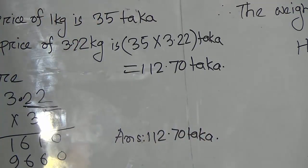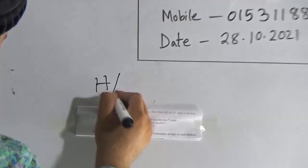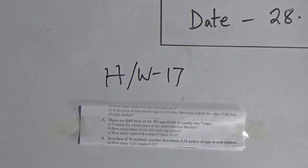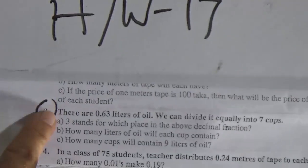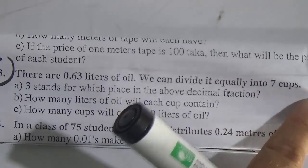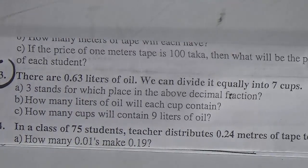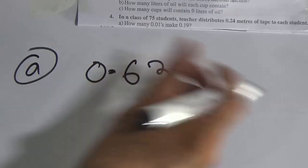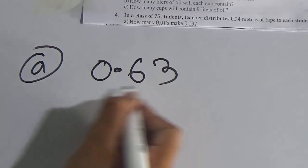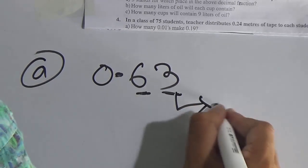My dear students, hope you understood this one. Practice it at home. Now look here — your homework is question number 17, question number 3. There are 0.63 liters of oil and we can divide it equally into 7 cups. For number A: 3 stands for which place in the decimal fraction 0.63? After the decimal point, the first place is tenths and the second is hundredths. So 3 is in the hundredths place.